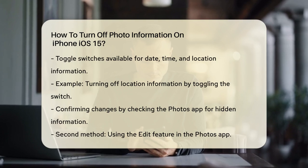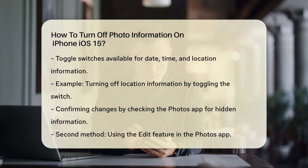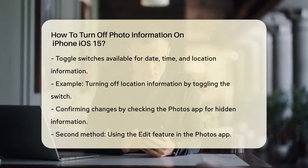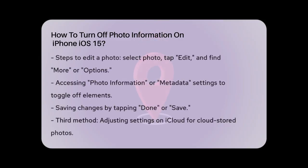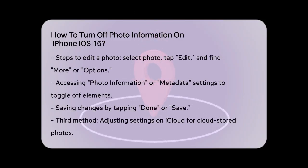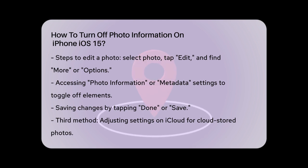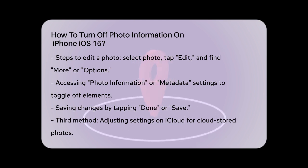Another way to achieve this is by using the Edit feature within the Photos app. Open the Photos app, select the photo you want to edit, and tap on the Edit button at the top right corner. Look for the More or Options icon, which might be represented by three dots or an ellipsis, and tap on it to expand the editing options. Among these options, you'll find one related to photo information or metadata. Tap on it to open the settings, where you can toggle off the elements you want to hide. Once you've made your changes, tap on Done or Save to apply the edits.